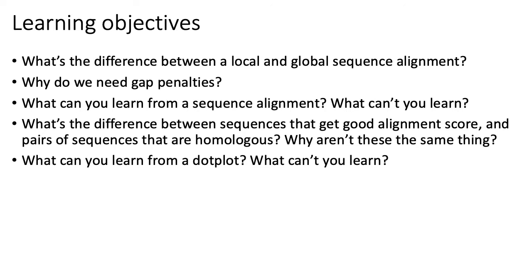For example, I want you to be able to understand the difference between identifying sequences that align well and get a good alignment score, versus pairs of sequences that are actually homologous. Homologous formally means derived from the same origin. Can you infer homology from alignment scores? It's also important to understand what a dot plot is and what you can and cannot learn from one.